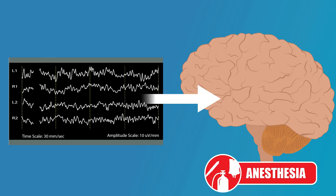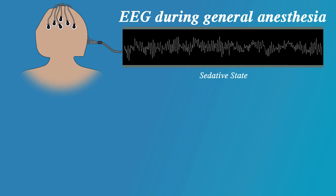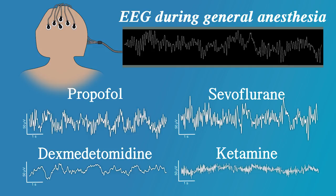During general anesthesia, there are highly structured patterns within the EEG waveform. These patterns relate to different states of altered arousal. Furthermore, we can relate these patterns to the physiological actions of different anesthetics on specific molecular targets in specific neural circuits. Just like the case of the ECG, you just have to learn what these patterns are, and after a time, it becomes second nature.